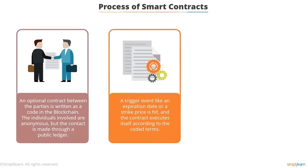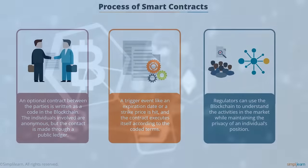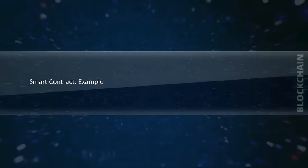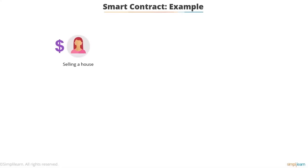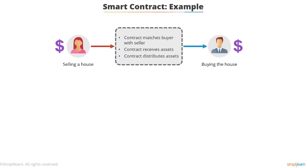Process of smart contracts: first, an optional contract between parties is written as code into the blockchain — the individuals involved are anonymous but the contract is made through a public ledger. Then a trigger event — like an expiration date or a strike price being hit — causes the contract to execute itself according to the coded terms. Regulators can use the blockchain to understand market activities while maintaining individual privacy. Example: in the purchase and sale of a house, once a buyer is matched with a seller all assets are sent into the contract, which distributes assets based on predetermined conditions coded into the smart contract.